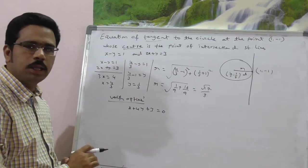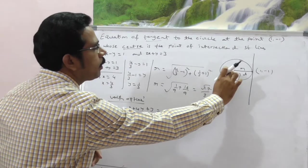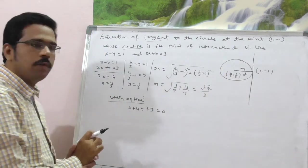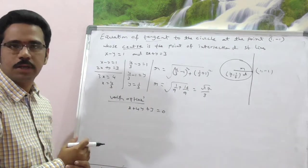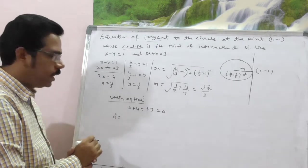The simple shortcut method. x plus 4y is equal to 3. Here, you have to check d. What is d? Perpendicular distance from (4/3, 1/3) to given line. If it is root 17 by 3, automatically this will be the tangent equation. Just apply perpendicular distance concept.